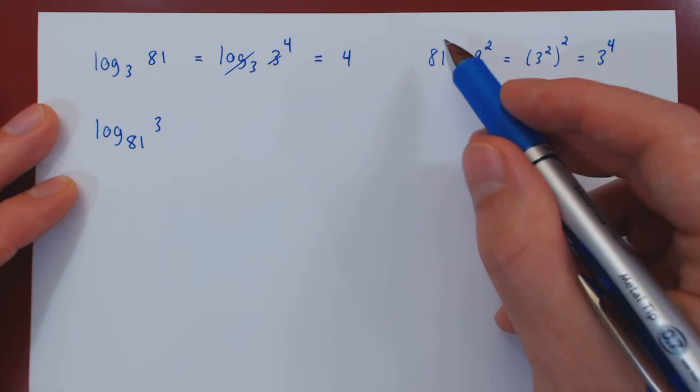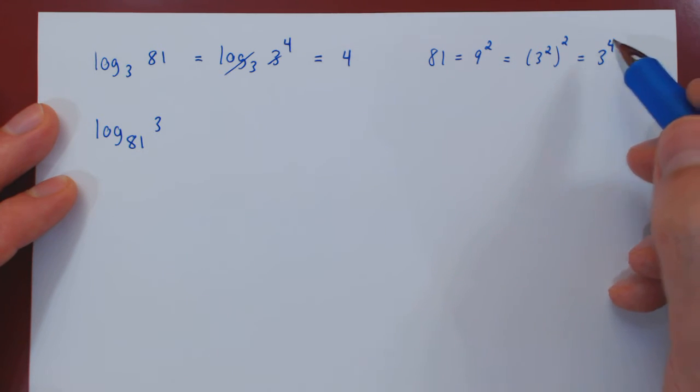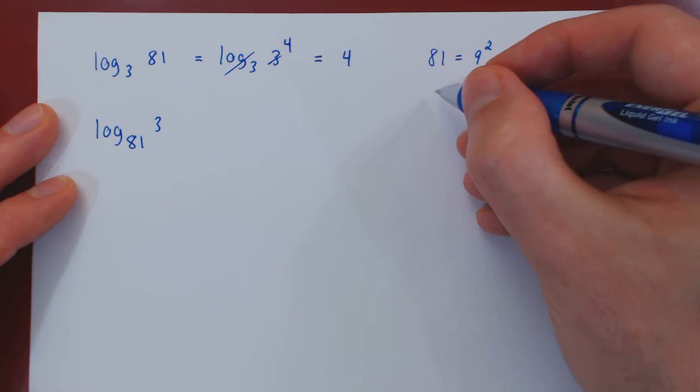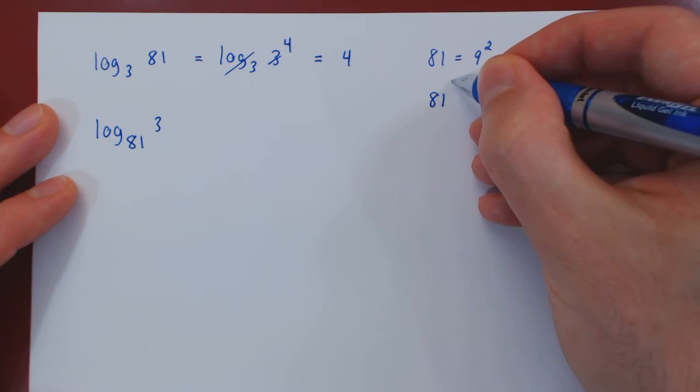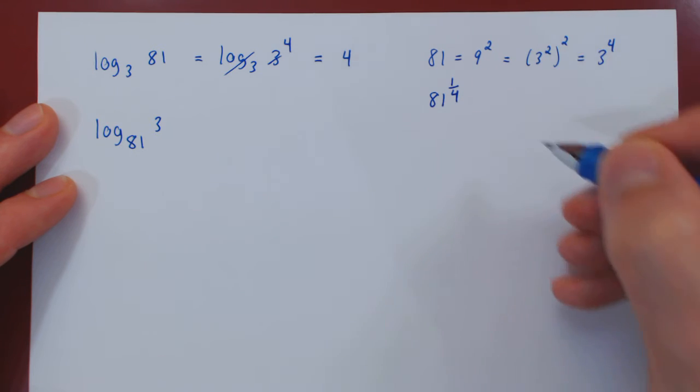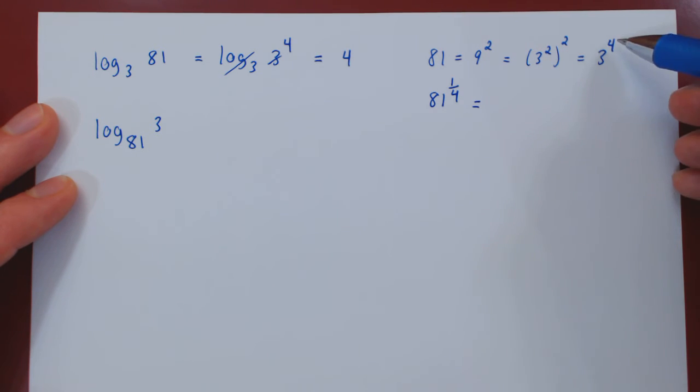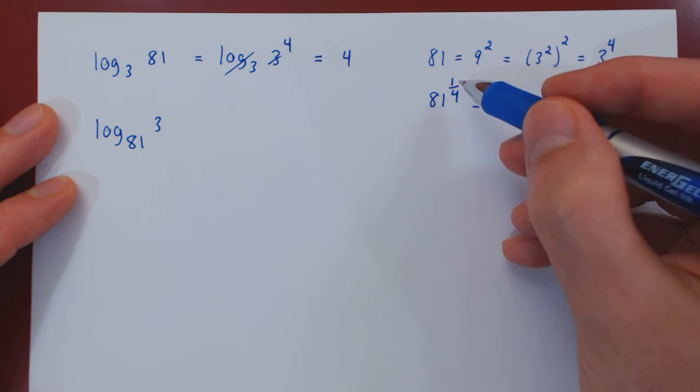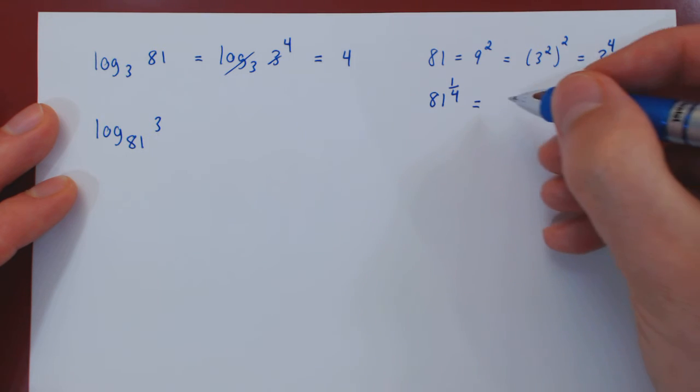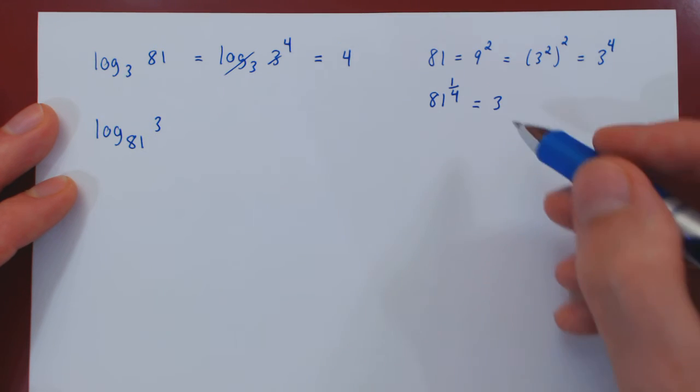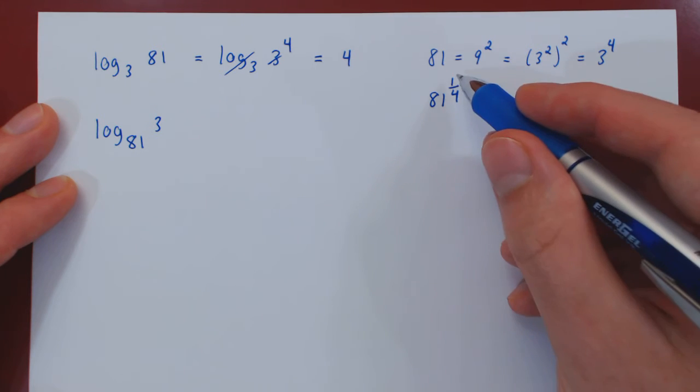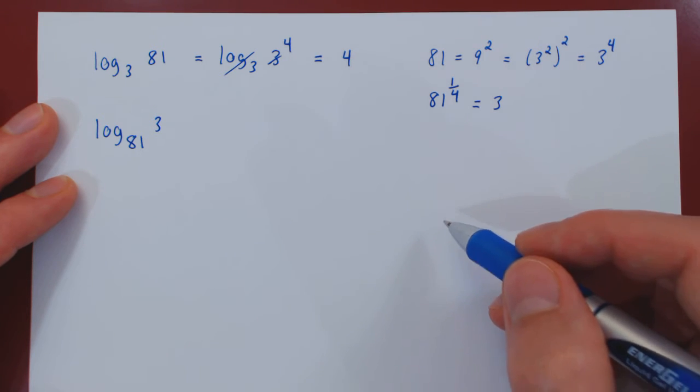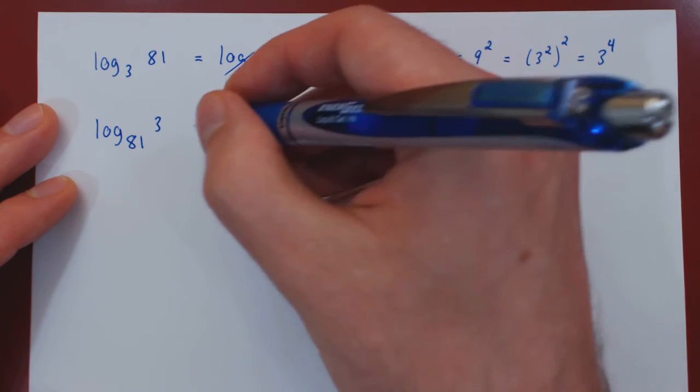Well, if you think about this, since 81 is 3 to the 4, take the 4th root on both sides, and you get that 81 to the power of 1 over 4 equals—and taking the 4th power, 1 quarter times 4 is 1, so it cancels the 4—and so 3 is 81 to the power of 1 over 4. So now we'll make this substitution.